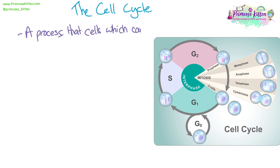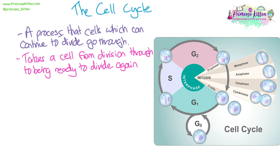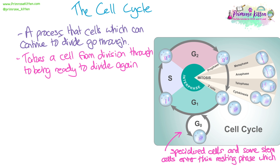The cell cycle is a process that cells which can continue to divide go through. It takes a cell from having just divided through to being ready to divide again. Not all cells will continuously go through this cycle. Specialized cells, and some stem cells, enter a resting phase called G0, and this can be temporary or it can be permanent.